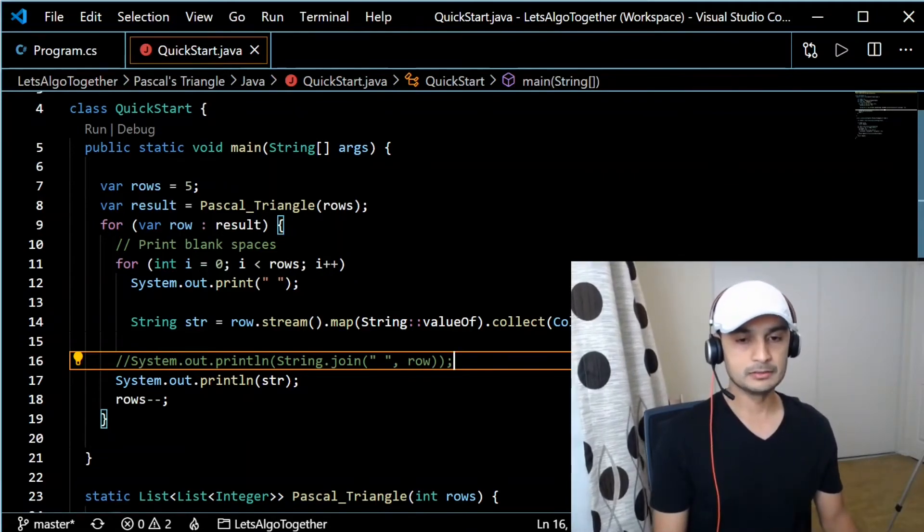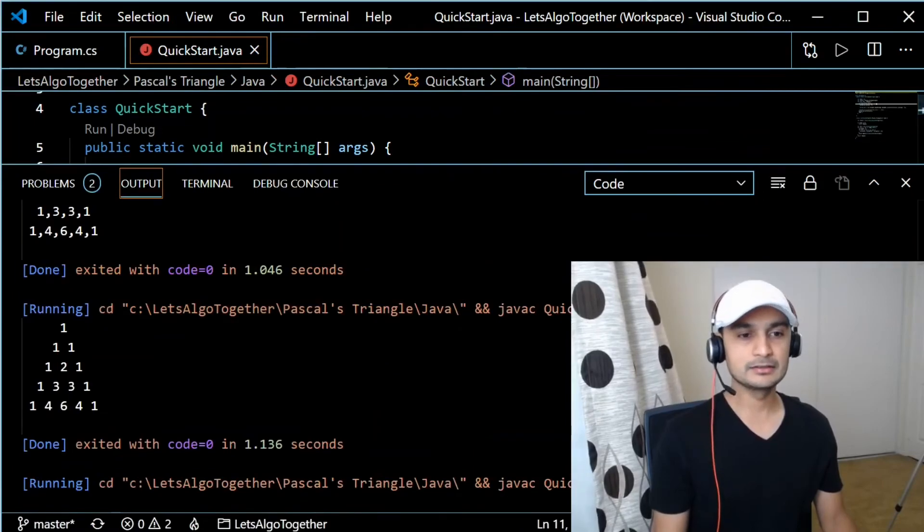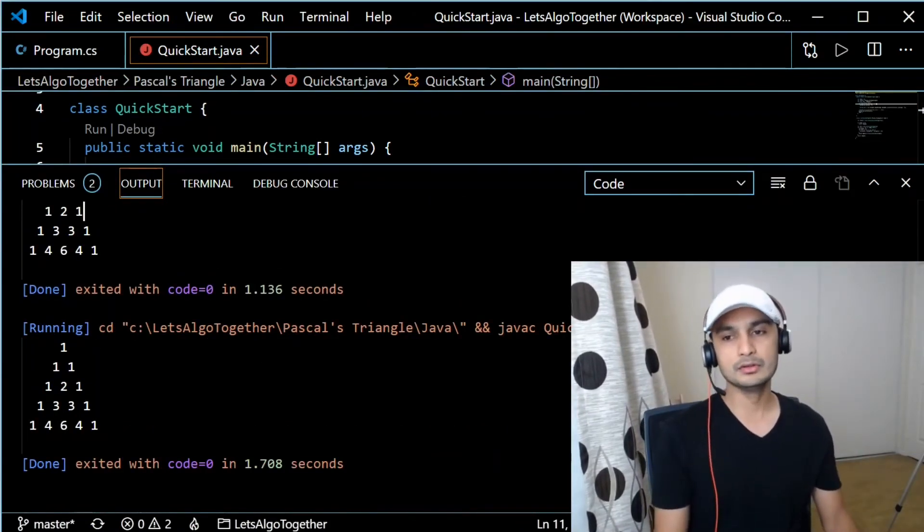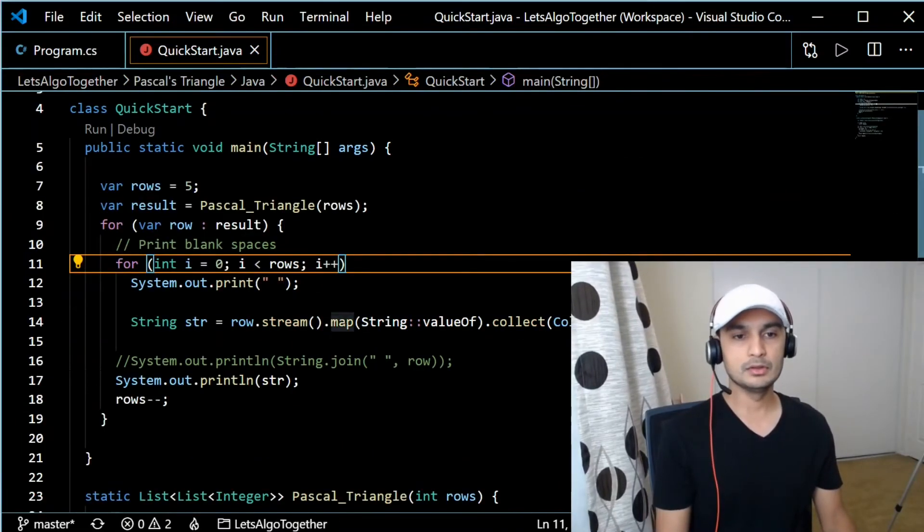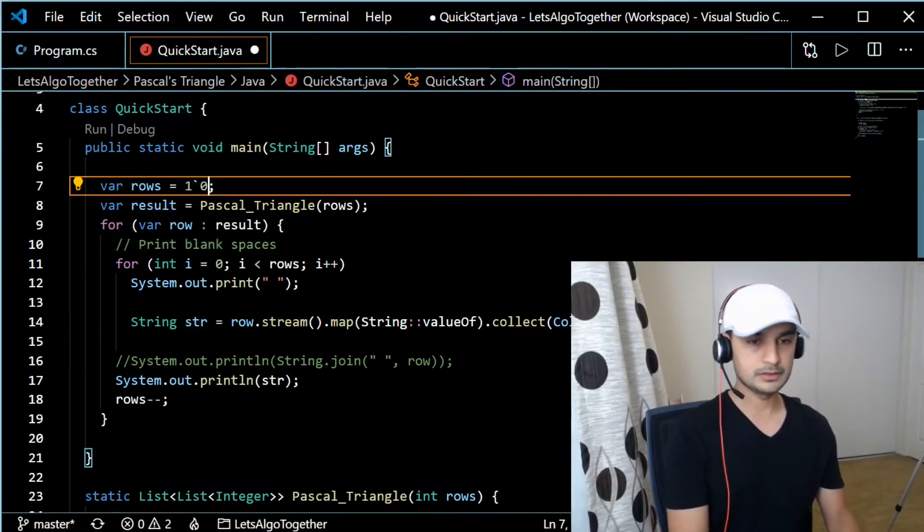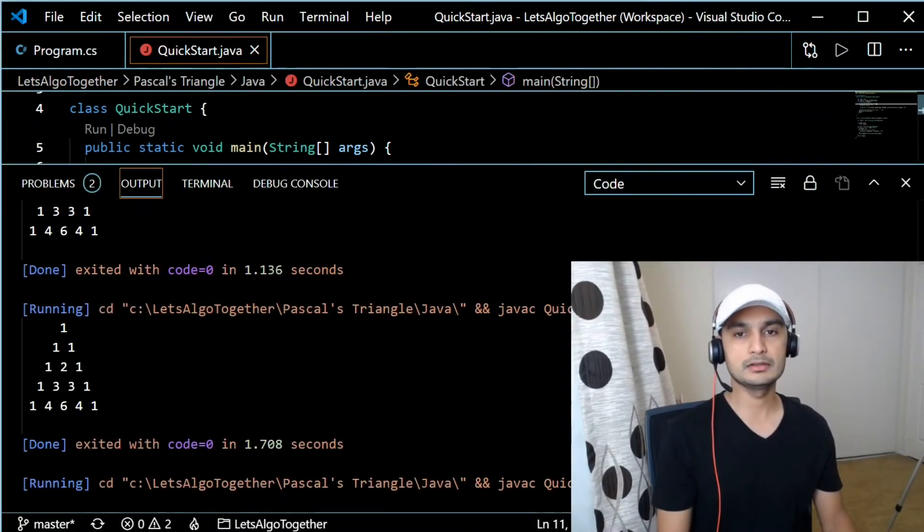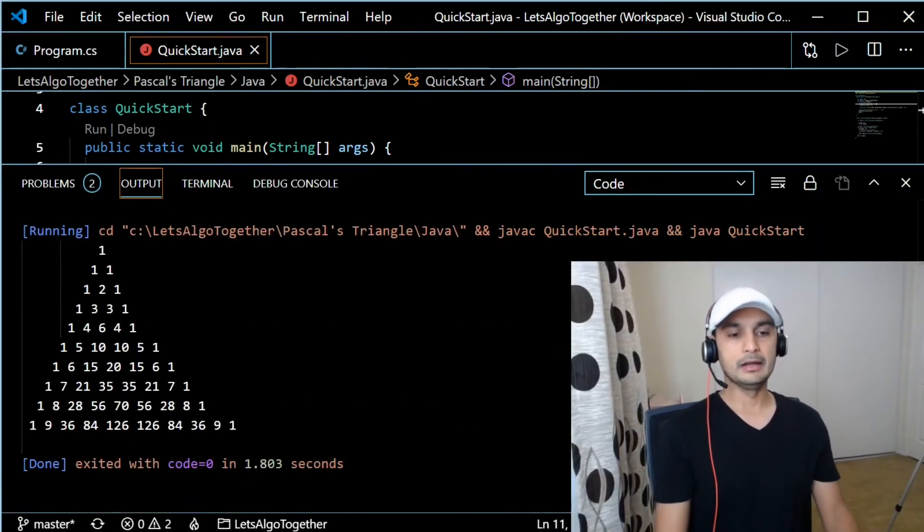Let's run this code. It's for five rows. So there you go, we have our Pascal's triangle for five rows. Obviously we can change number of rows and we can get bigger triangle. Let's just run it once and let's see how it looks.